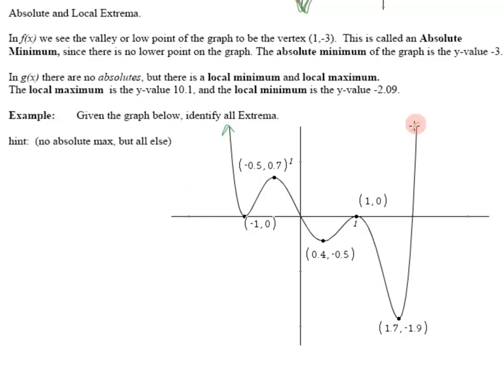Goes on forever. Goes on forever. If it goes on forever and ever up, there is no absolute max. Is there an absolute minimum? Yes, right there. So let's write that out. Absolute minimum: negative 1.9.